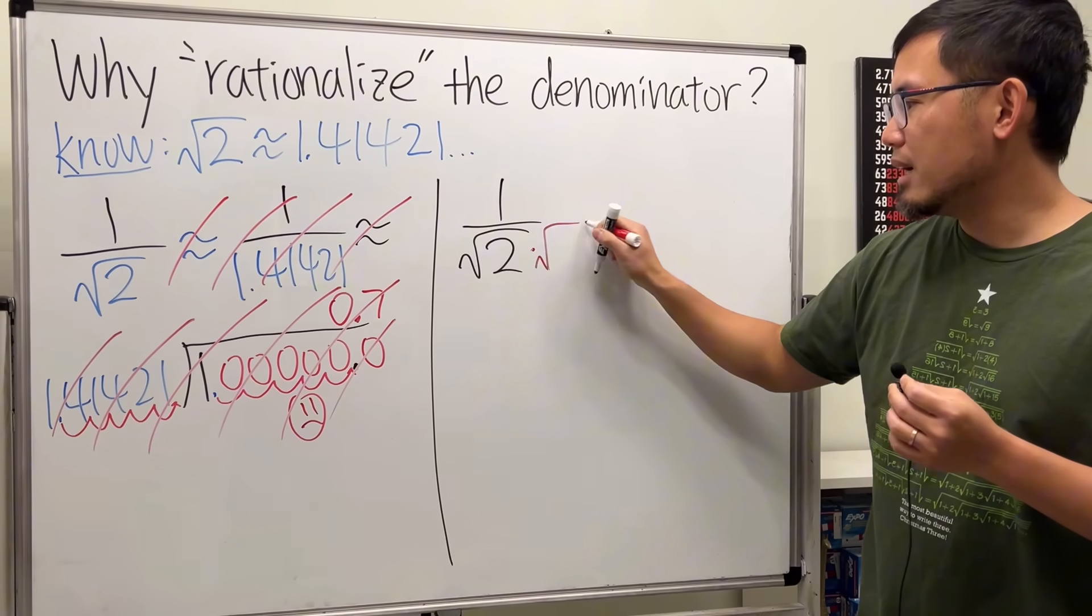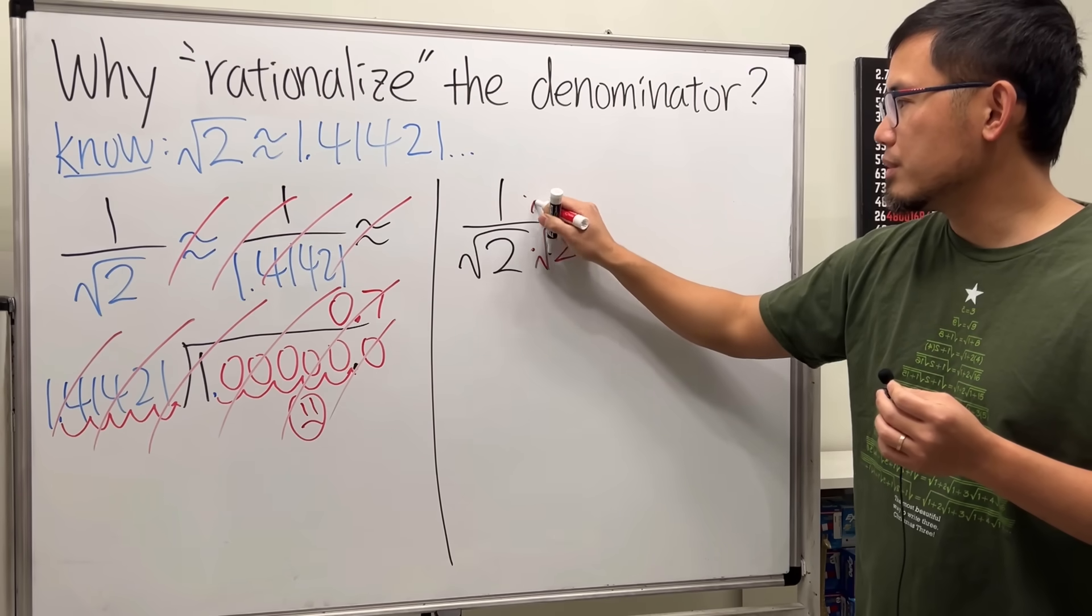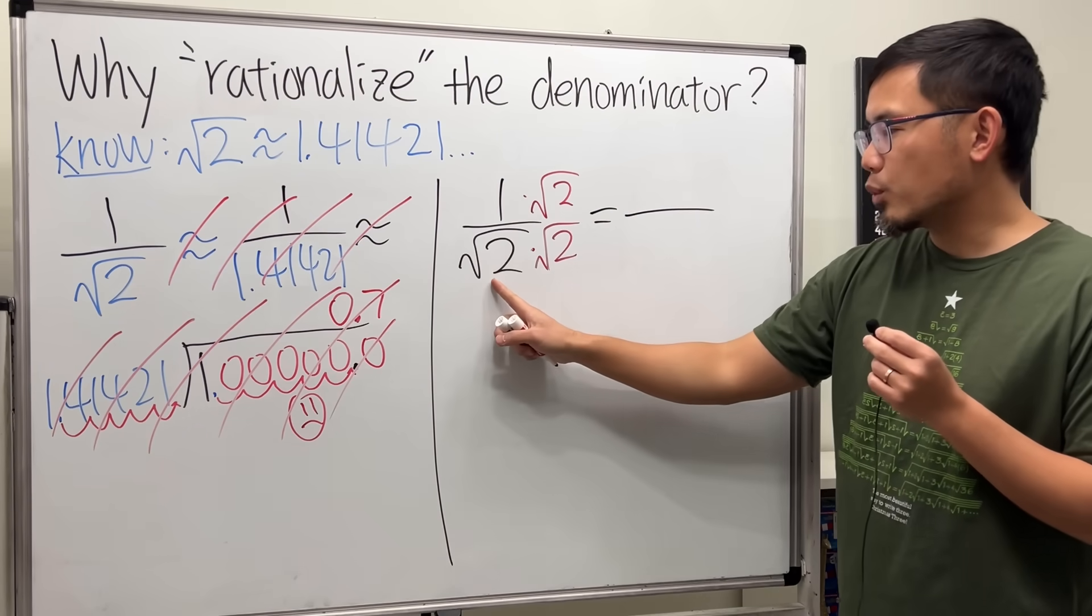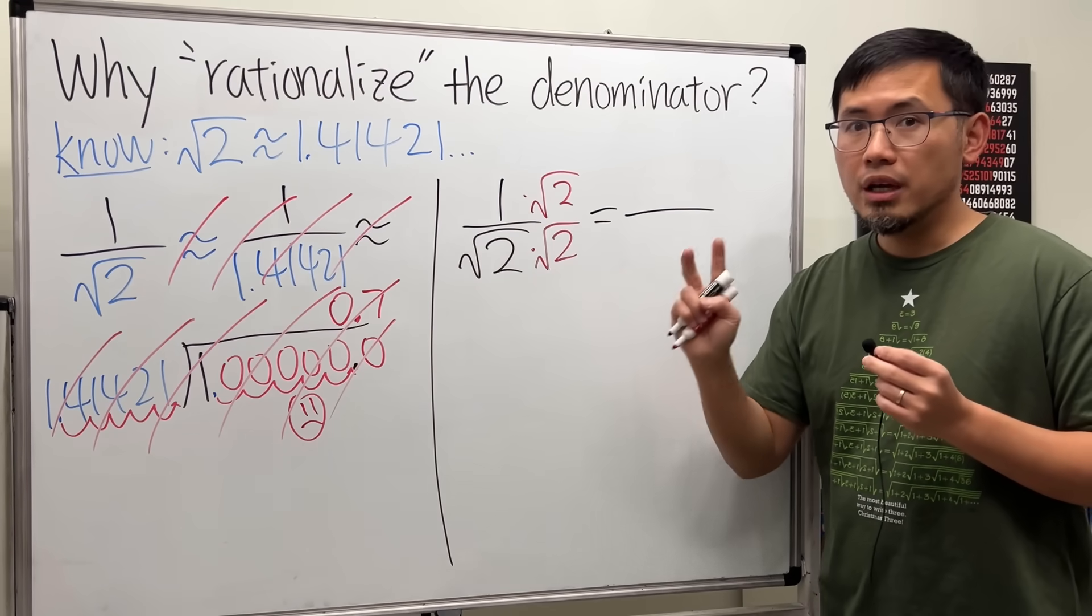Suppose we rationalize the denominator. To do so, we multiply the top and bottom by the same thing: √2. This is because on the bottom we have √2 times √2, and that's just equal to 2.